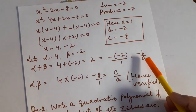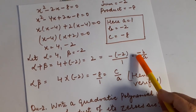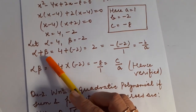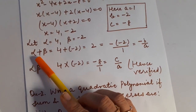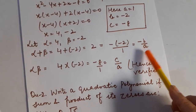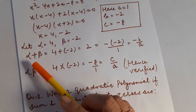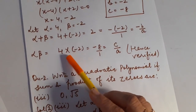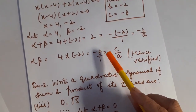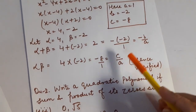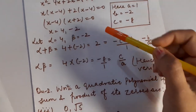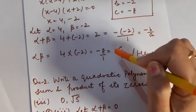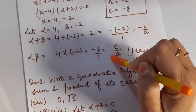In place of minus 2, I write b; the minus stays; and in place of 1, I write a. Through this, I have shown the relation of zeros with minus b by a — sum of zeros equals minus b by a. For alpha times beta: 4 times minus 2 = minus 8, which is c by a. So you have come to know that there is really a relationship between the zeros and the coefficients of the polynomial.